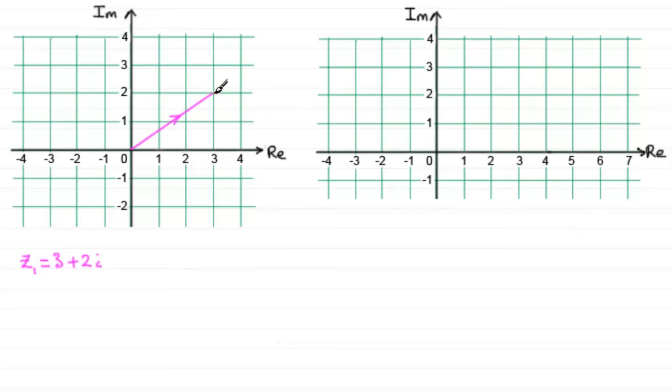So it looks like a vector. It has length and direction. So this would be how we represent Z1 on an Argand diagram.